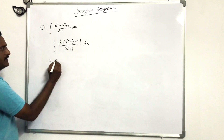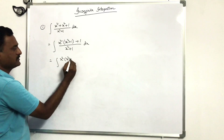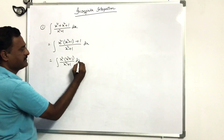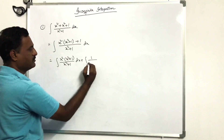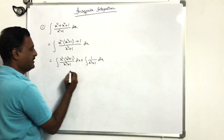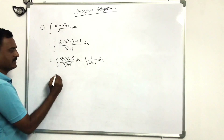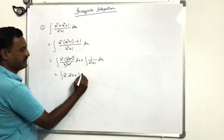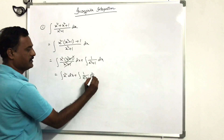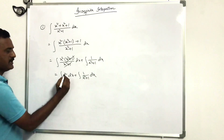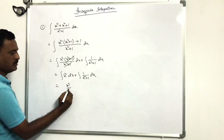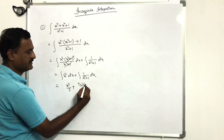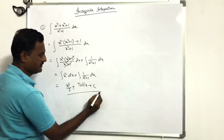That is equal to integration of x²·(x² + 1)/(x² + 1) dx plus integration of 1/(x² + 1) dx. Here (x² + 1) cancels, giving integration of x² dx plus integration of 1/(x² + 1) dx. Integration of x² is x³/3, and 1/(x² + 1) is tan⁻¹x plus c. This is the answer.